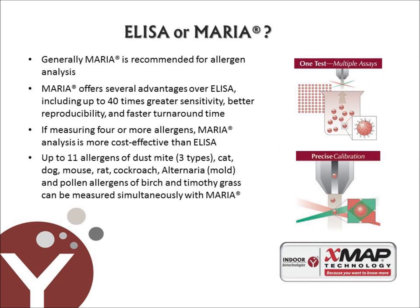Which method do I choose — ELISA or MARIA? Generally, we suggest using MARIA for allergen analysis. MARIA offers several advantages over ELISA, including increased sensitivity, better reproducibility, and faster turnaround time. Also, if measuring four or more allergens, MARIA analysis is more cost-effective than ELISA. You may want to choose ELISA if you have used this method in the past and would like to maintain assay consistency.